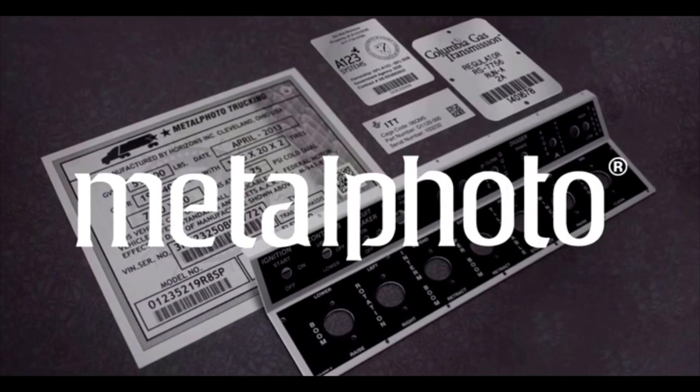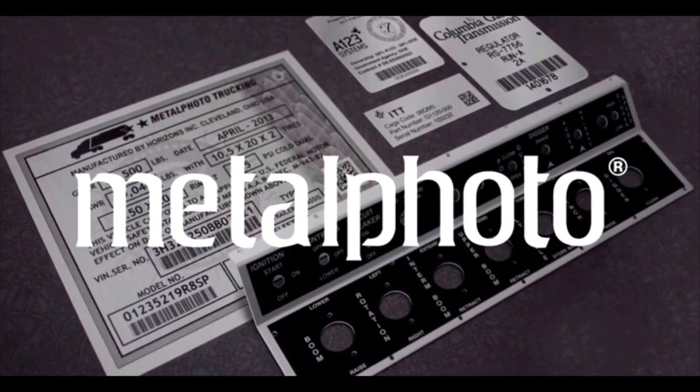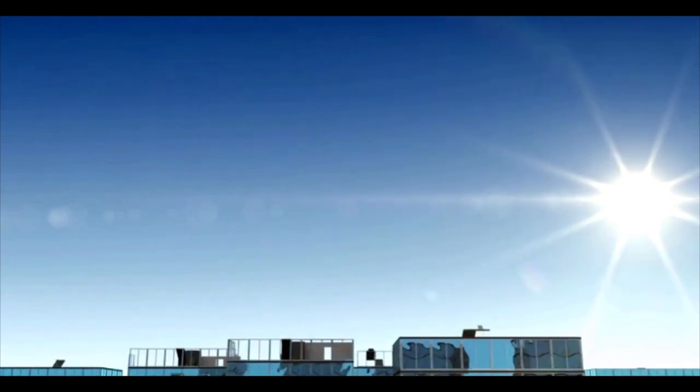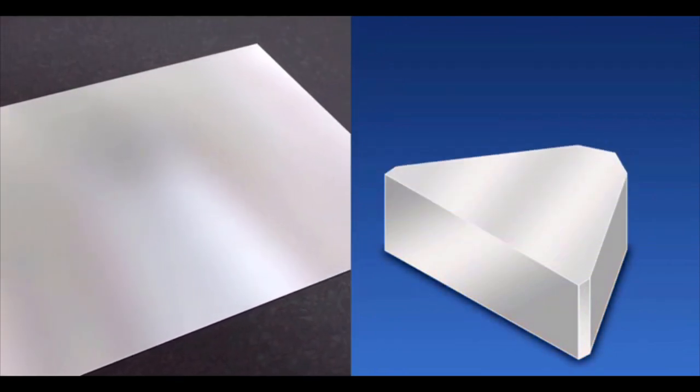MetalPhoto is a specialized type of anodized aluminum used to make nameplates, labels, and control panels. To better understand MetalPhoto, let's build a MetalPhoto part from the ground up. First, MetalPhoto's construction begins with pure 1100 alloy aluminum.